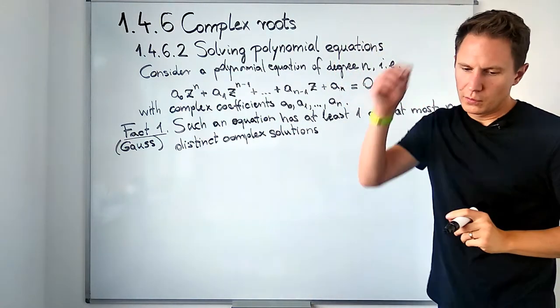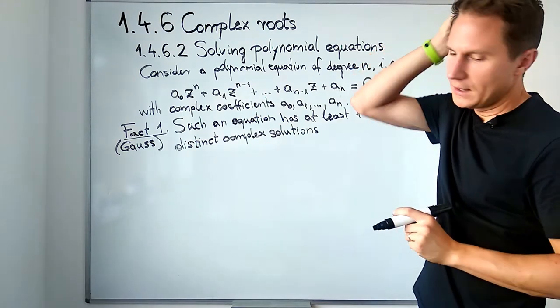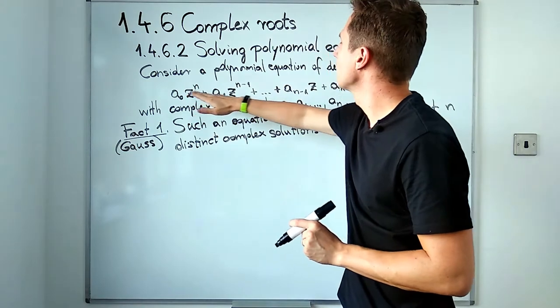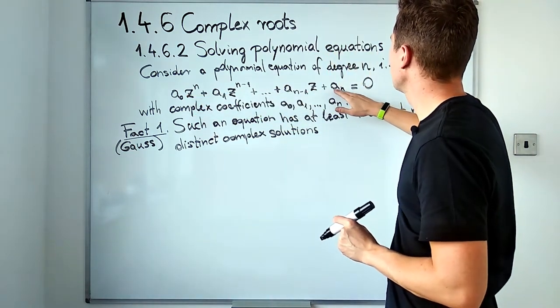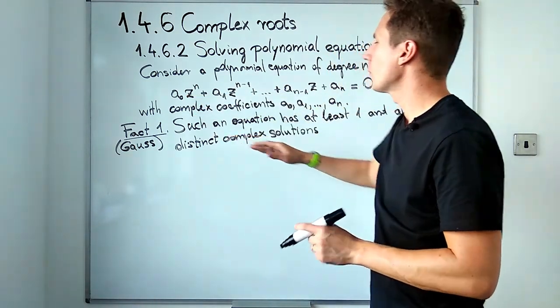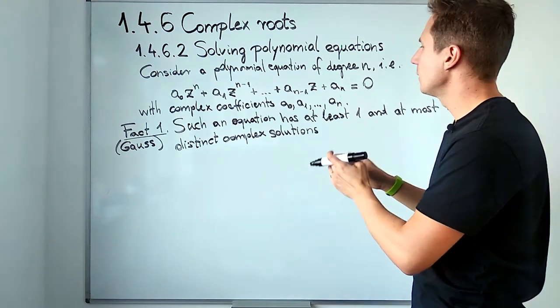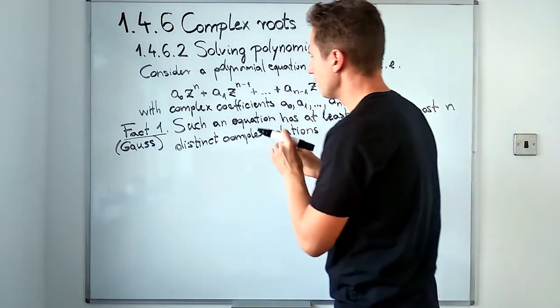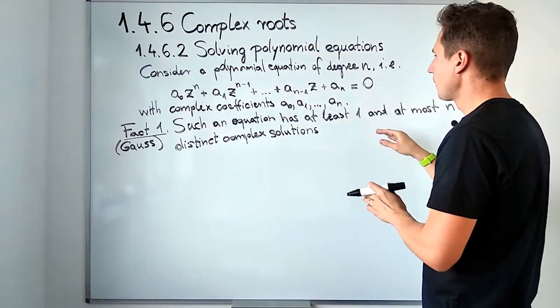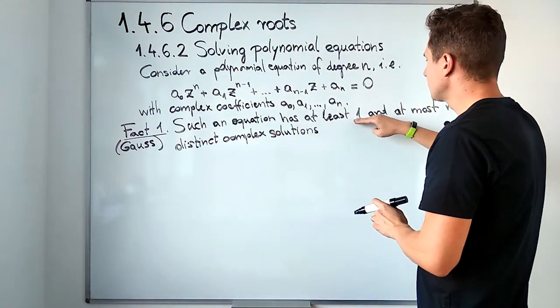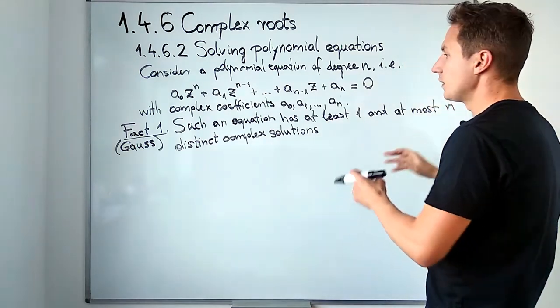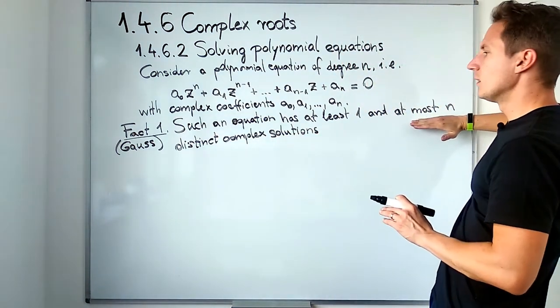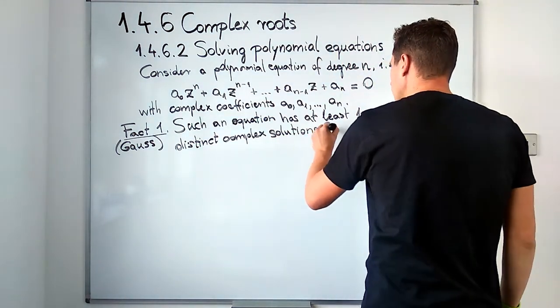Okay, so what I say here is there are always n complex solutions to an equation like this, but they might coincide. So if we count them as distinct numbers, we are really focusing on the values of these numbers. It could be that they all coincide into just one complex solution, but they could be really different, all of them, in which case we would have n complex solutions.